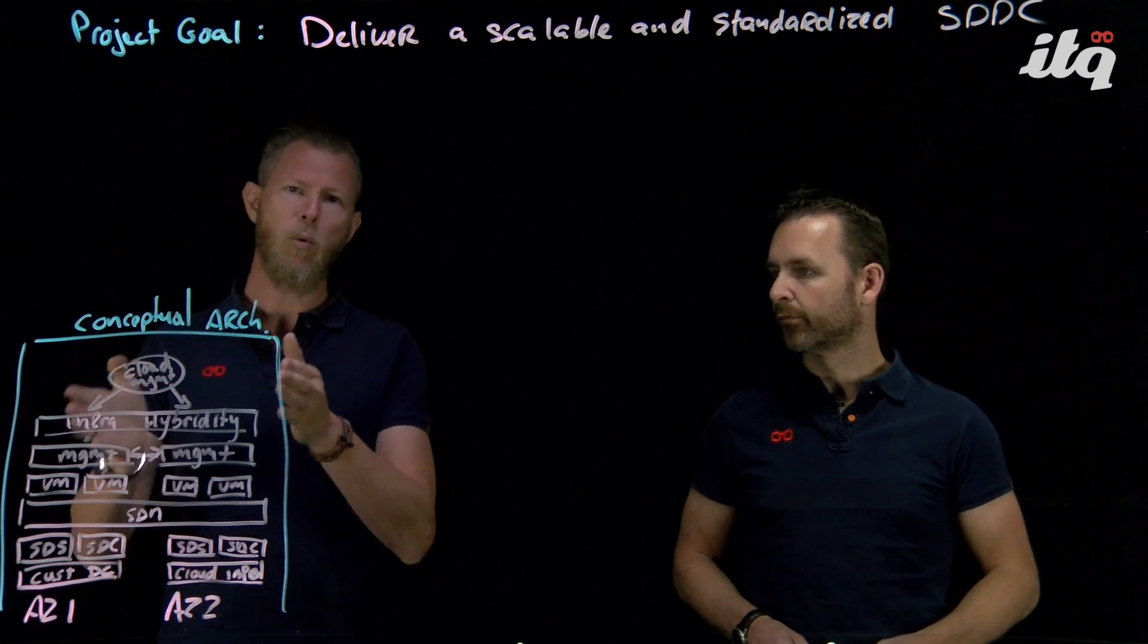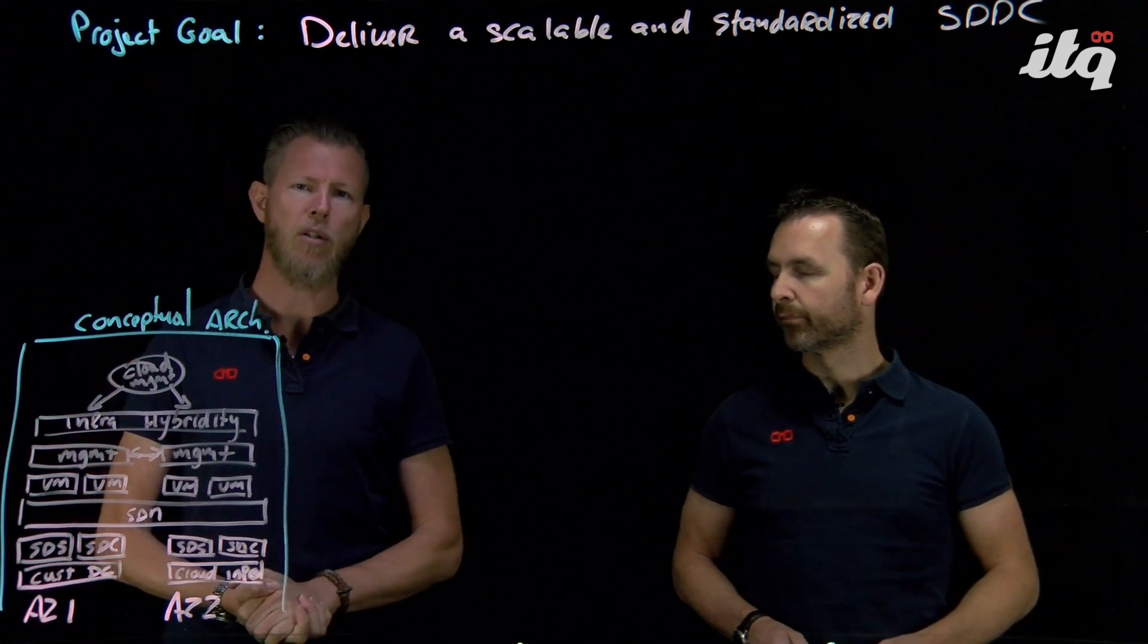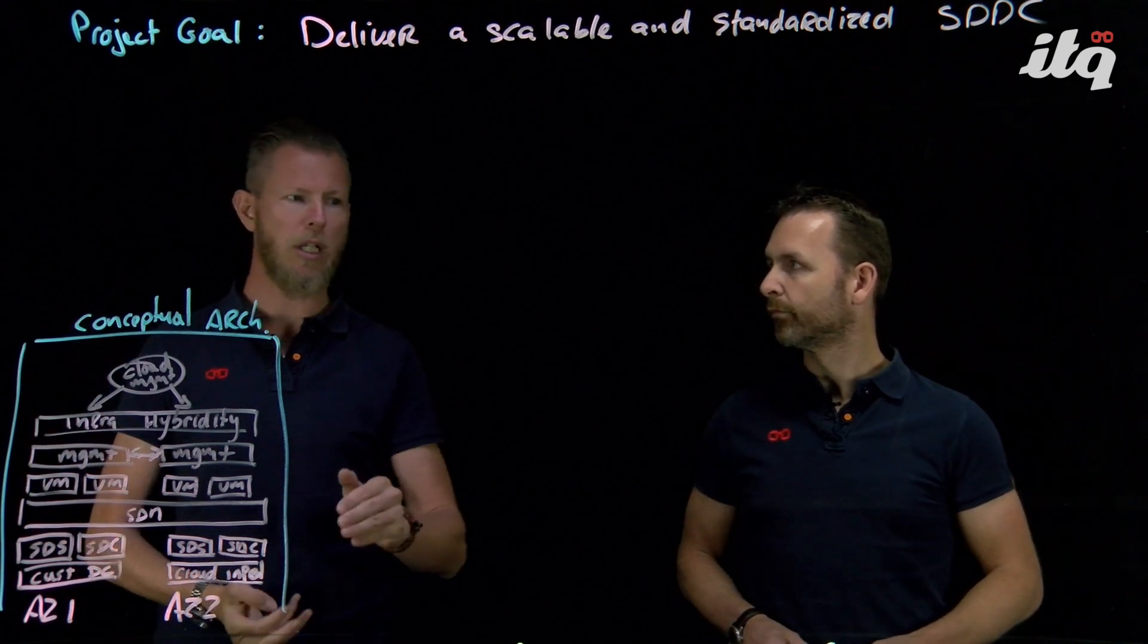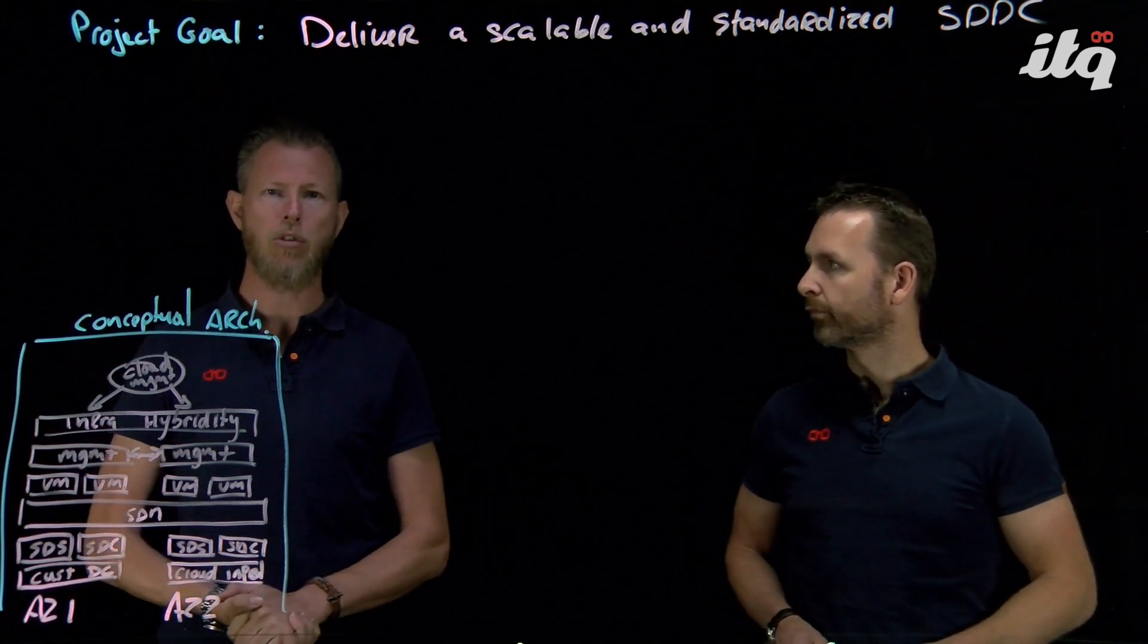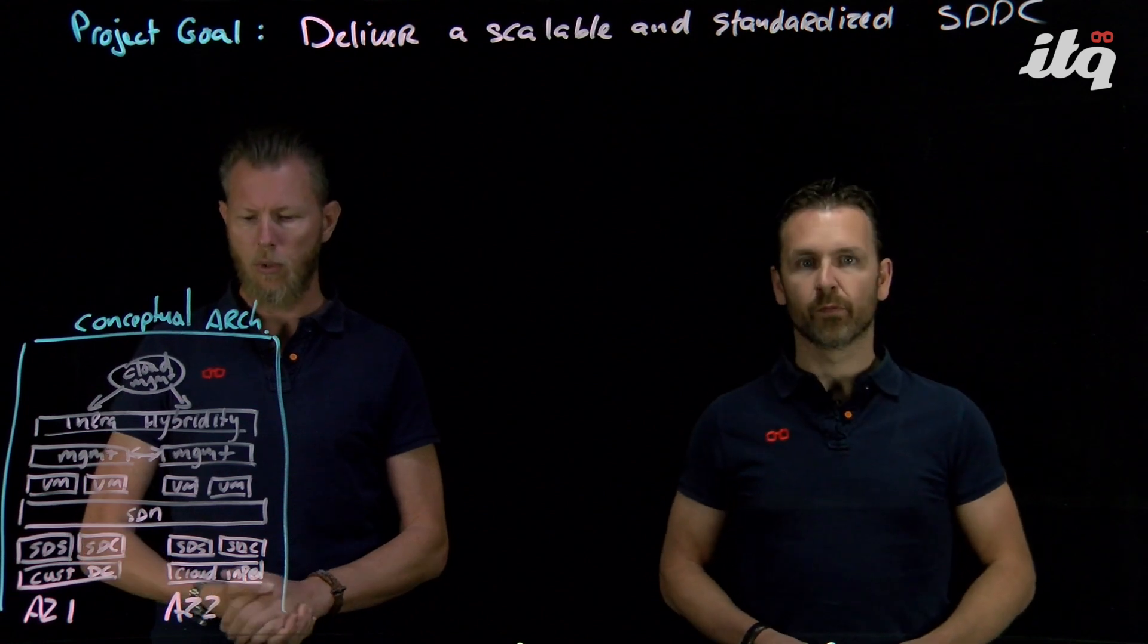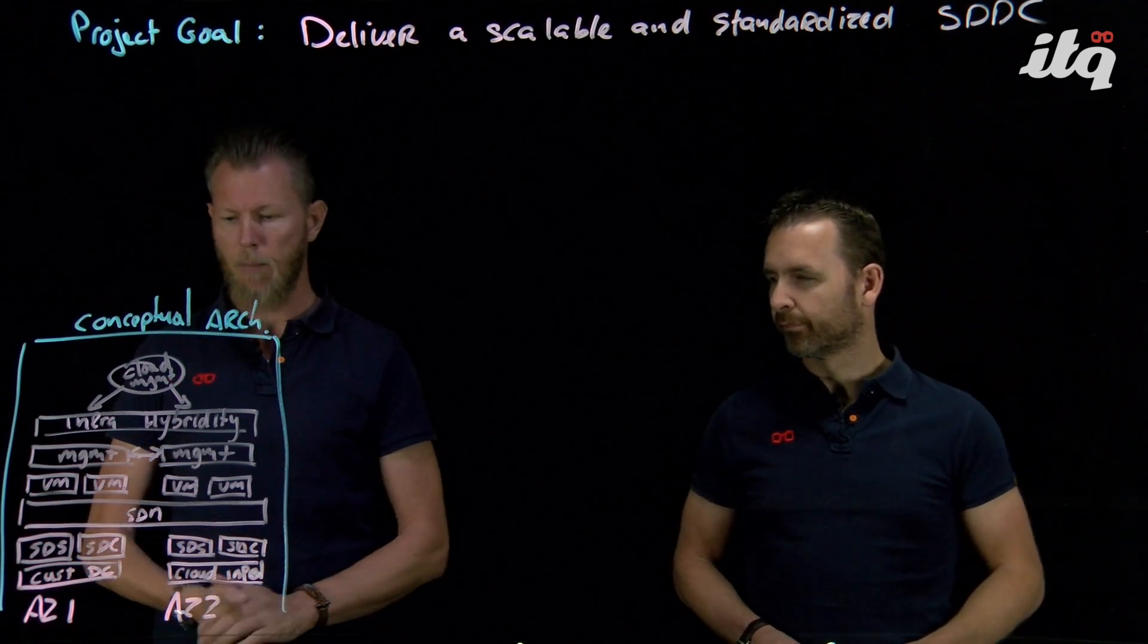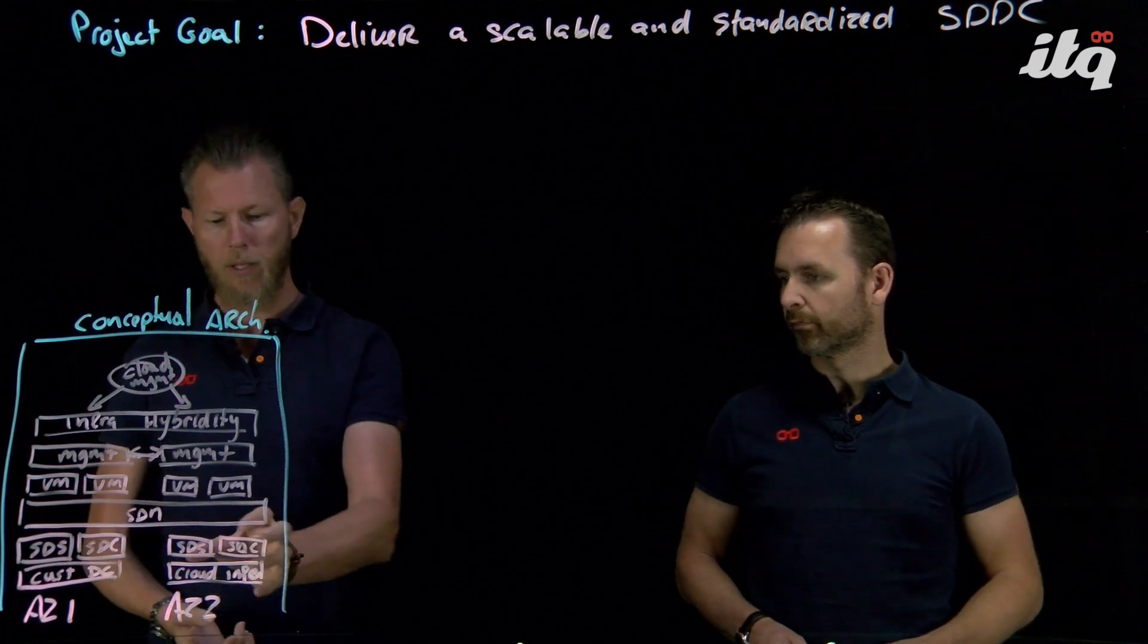In the previous video we dove into the conceptual architecture, and this architecture diagram that you see here is basically the outcome of what we described in the last video. So you see two availability zones, one on-prem, one in the cloud.